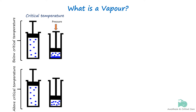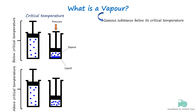A substance that is below its critical temperature can exist in both its liquid and gaseous forms. The gaseous form of such a substance is called a vapor. If enough pressure is applied, this vapor will condense into a liquid. In contrast, a gas that is above its critical temperature remains in its gaseous form and will not condense into a liquid, no matter how much it is compressed.